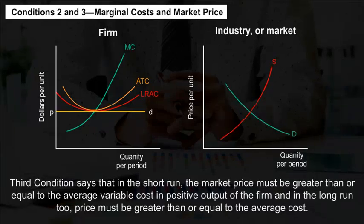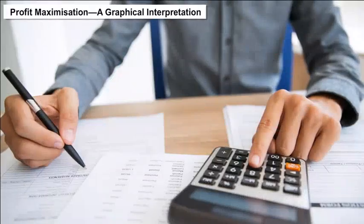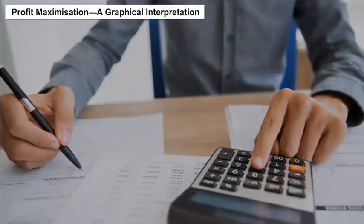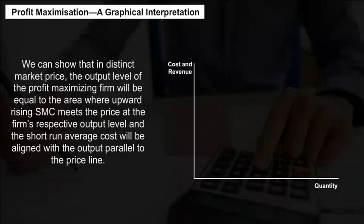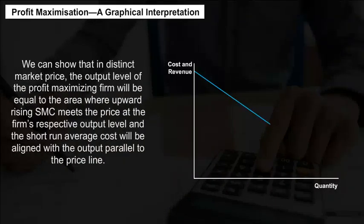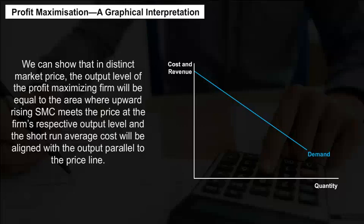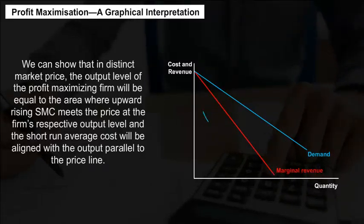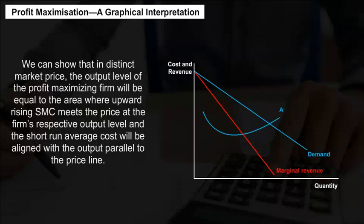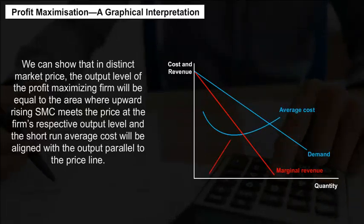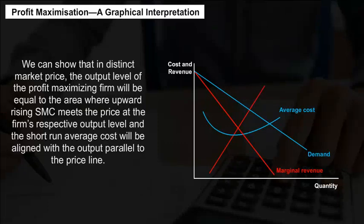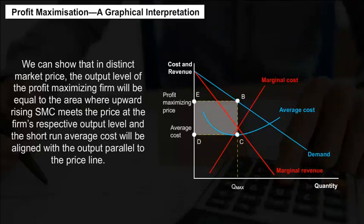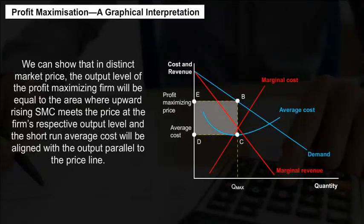In the long run too, price must be greater than or equal to the average cost. Profit maximization — a graphical interpretation. In a distinct marketplace, the output level of the profit-maximizing firm will be equal to the area where the upward-rising SMC meets the price at the firm's respective output level, and the short-run average cost will be aligned with the output parallel to the price line.